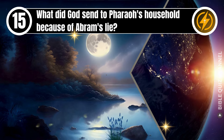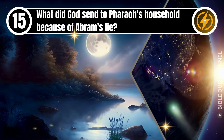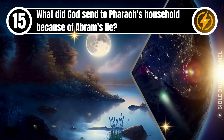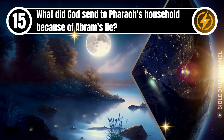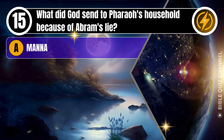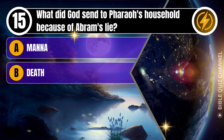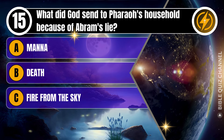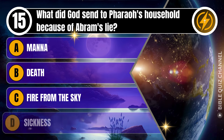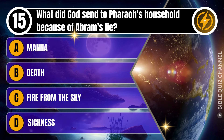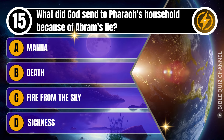Question 15. What did God send to Pharaoh's household because of Abram's lie? A. Manna. B. Death. C. Fire from the sky. D. Sickness. You get 10 seconds.